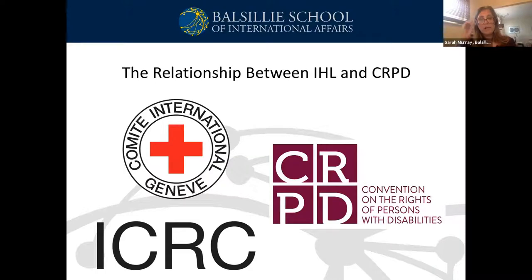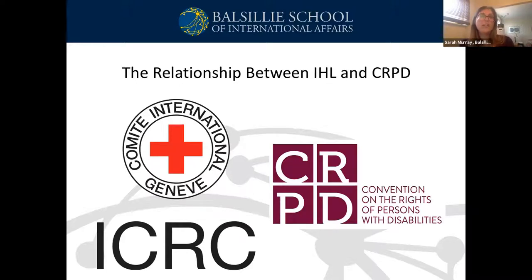The CRPD, the foremost human rights treaty on disability, and IHL are intended to be complementary to one another. The CRPD is unusual among human rights treaties in that it explicitly invokes humanitarian law alongside human rights law. The CRPD does not contain a derogations clause, which means that there is no possibility for states to suspend application of the convention during states of emergency or armed conflict. Instead, it affirms that the rights of people with disabilities continue to apply during armed conflict and that these rights exist alongside IHL.